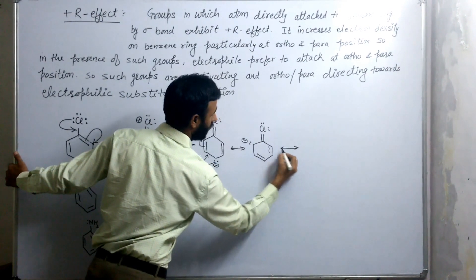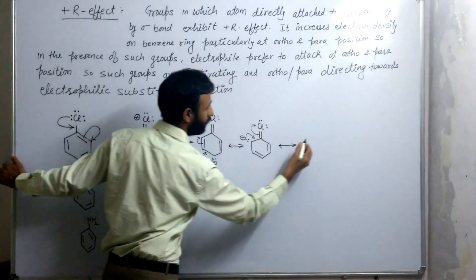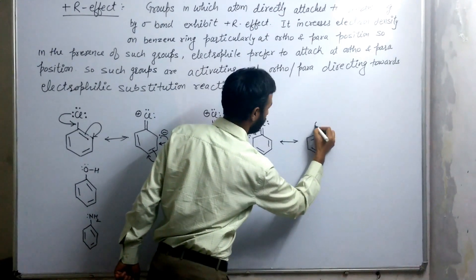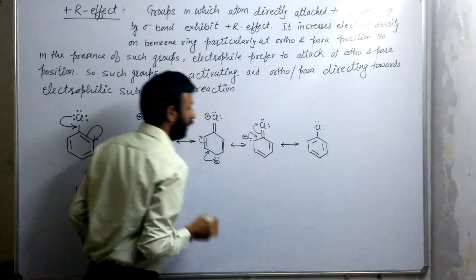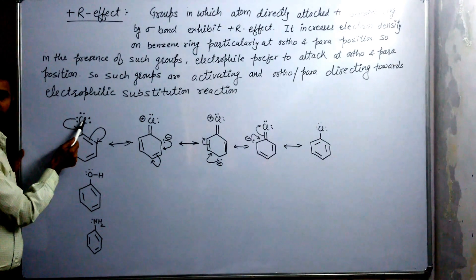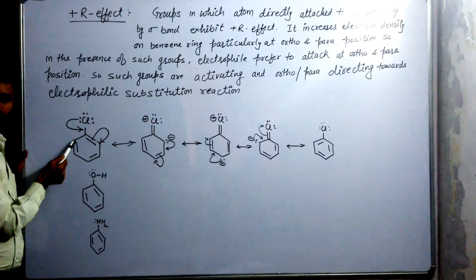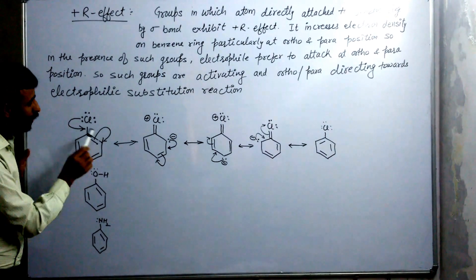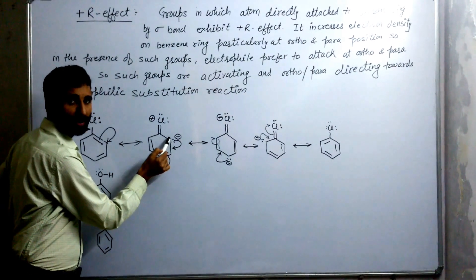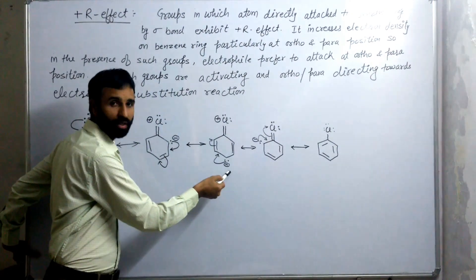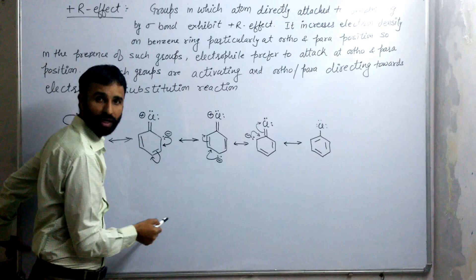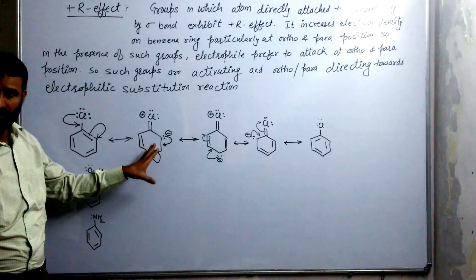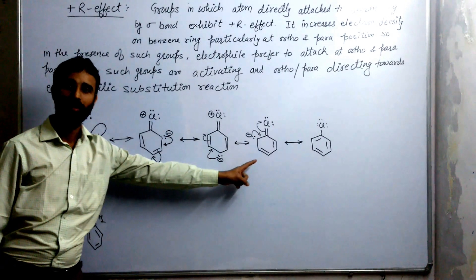At the end, we again get the same structure. Now you can see: with respect to chlorine, these two positions are ortho, the next two are meta, and this one is para. So in this plus R effect, the ortho carbon acquires a negative charge. In the next structure, the para position acquires a negative charge. Again, ortho acquires a negative charge. So electron density on the ring increases at the ortho and para positions.